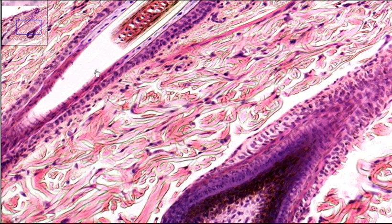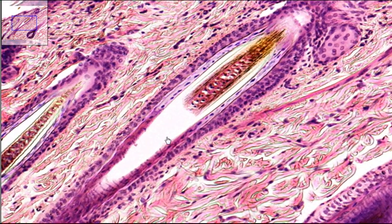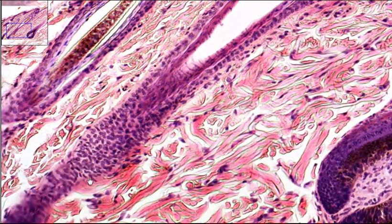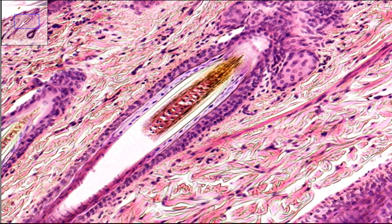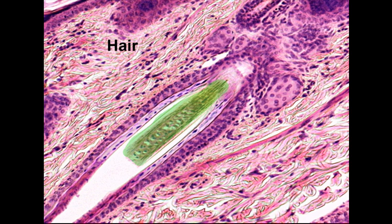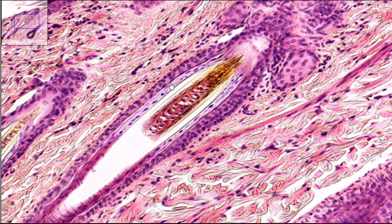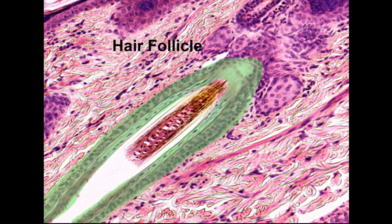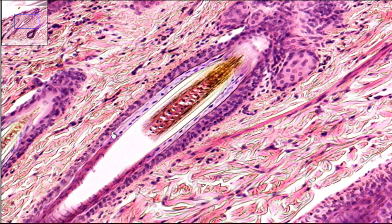If we move to a different hair follicle, you can see this one for instance. Because it's cut in a different plane, you really can't see the hair papilla down here. But what you can see is the actual hair itself within the hair follicle. We have the outer edges here and here being the hair follicle, and this is the actual strand of hair itself. You have these kind of reddish-tinged cells inside — that is a portion of the medulla of the hair within the hair root.